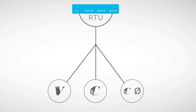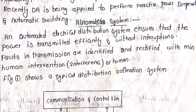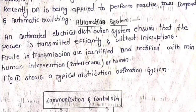A typical distribution system — how does it work without interruptions? Any power interruptions can be decreased by using an automated system. An automated electrical distribution system ensures that power is transmitted efficiently and without any interruptions. Faults in transmission lines are identified and rectified with minimum human intervention, meaning the electrical engineer can easily identify the fault in a feeder, generator, or any transformer.